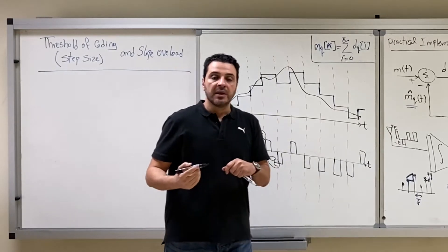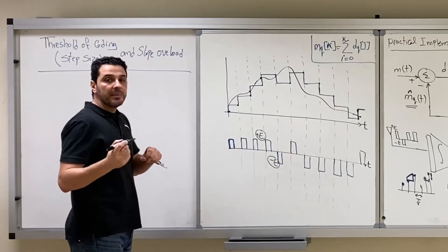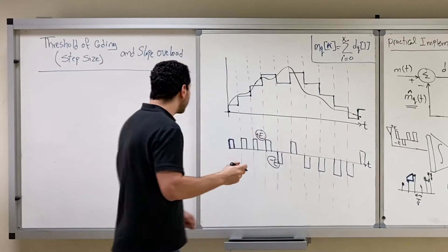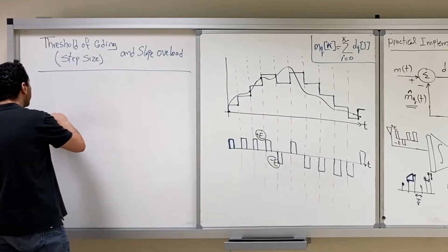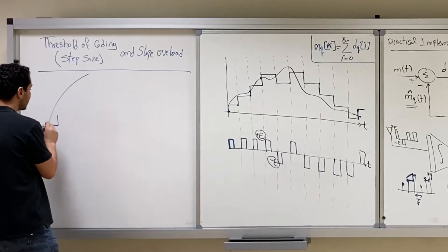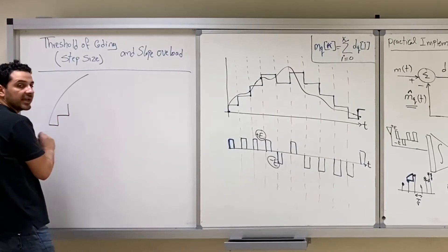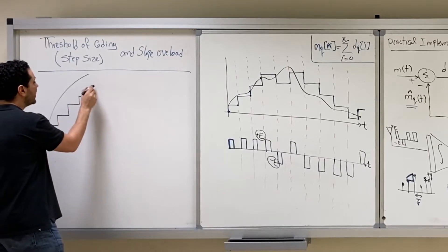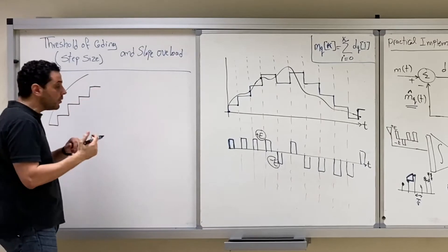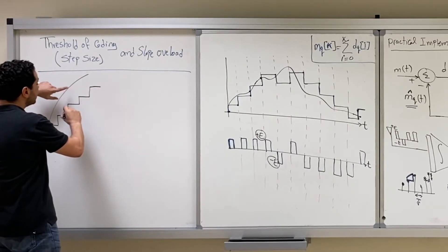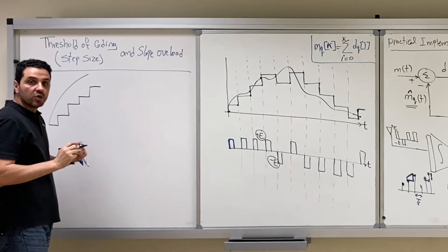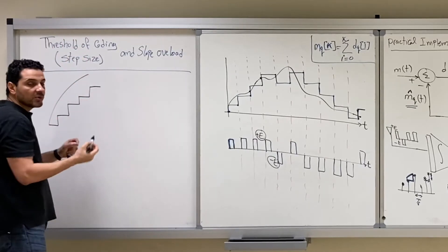Why would the step size cause a problem? From the name slope overload, the problem happens when the slope of the signal is very high, whether in the positive or negative side. When the signal goes up with a very high slope and you try to estimate it by sending a positive pulse, you go up but you can't catch the signal. You go up again but you can't catch it. If the slope is very high and your step size doesn't correspond to this high slope, there will be a big divergence between the original signal and the estimated signal, because the step size cannot catch the original signal.